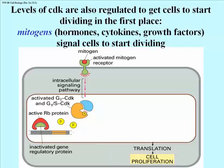Hormones are defined by the fact that they travel from endocrine organs through the vascular system — that is, through the blood — to target cells, to target tissues, to target organs. Growth factors and cytokines differ from hormones in that they are often signals passed directly from one cell to another without ever getting into the circulatory system.